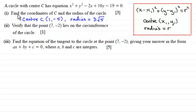And in the first part we had to find the coordinates of C and the radius of the circle, and we found out that the centre C had coordinates 1 minus 5, and the radius was 3 root 5.